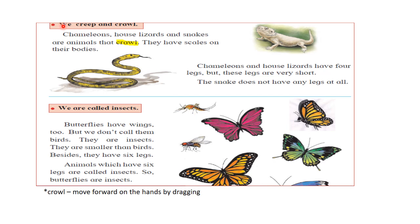The next type is reptiles. Chameleons, house lizards and snakes are animals that creep and crawl — they are called reptiles. They have scales on their body. Chameleons and house lizards have four legs, but their legs are very short. The snake does not have any legs at all and moves by a side-to-side motion called serpentine movement or gliding.